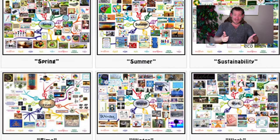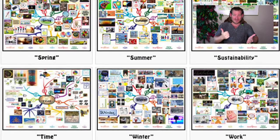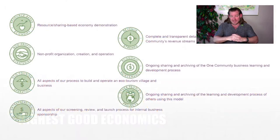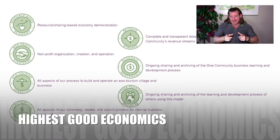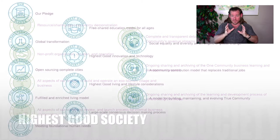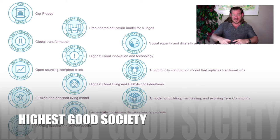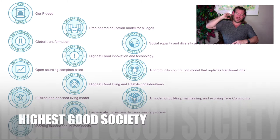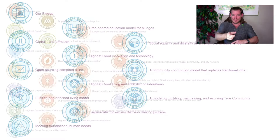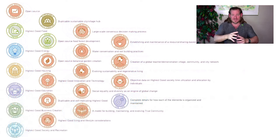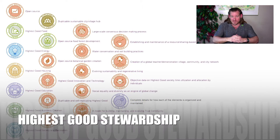The easiest way to participate is just to like this video and leave a comment saying you like what we're doing. Thanks for watching until the end. Stick around for another couple of minutes if you'd like to see bullet points of all the major components of our project. Until next week, we will keep on keeping on as we work towards this open source model and template for abundance through community living. Thank you.